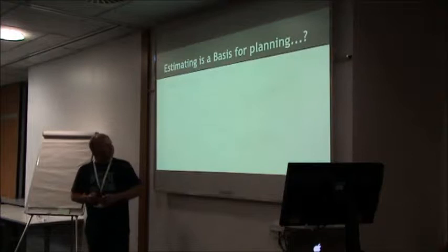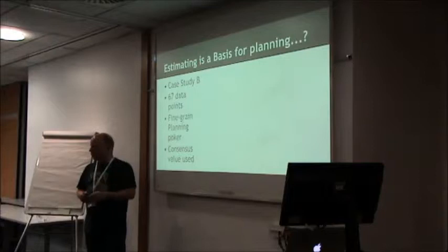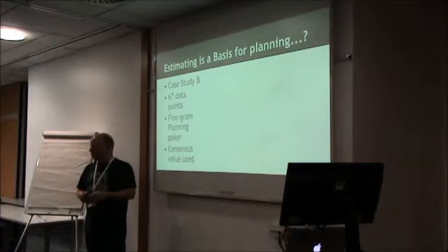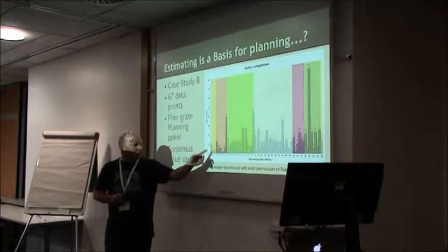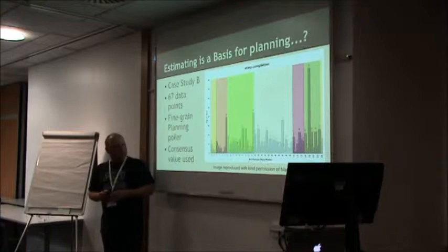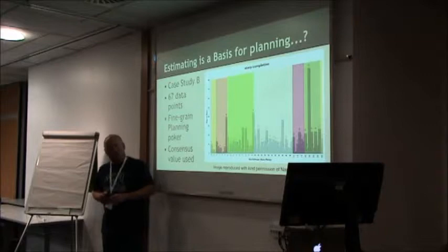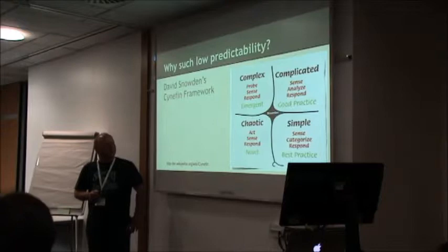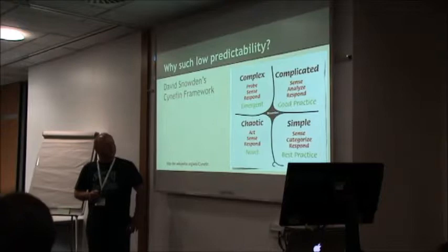Also, another case study with fewer data points. Again, planning poker, and people settled on one value. It's displayed differently — you've got different story point bands: the twos, threes, fives, eights, et cetera. What you would expect is that if estimates were accurate, you'd expect each of those bands to be more or less flat, but they're not. So why are we getting lower predictability? I think it's because of the complexity of the work we're about to do.